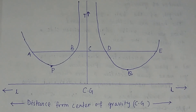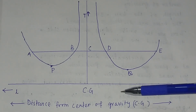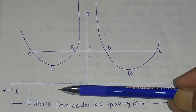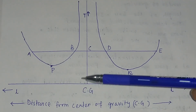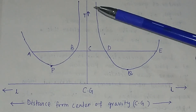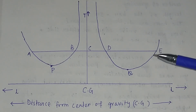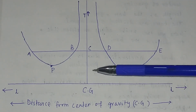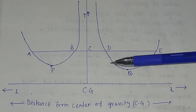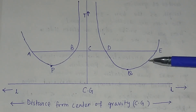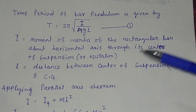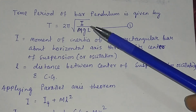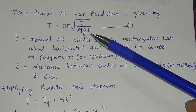If you plot a graph taking the distance from center of gravity, small l, along the x-axis and minus x-axis, and the time period along the y-axis, the nature of the graph will show one curve for one side and another curve for the other side. The time period of the bar pendulum first decreases and then increases.